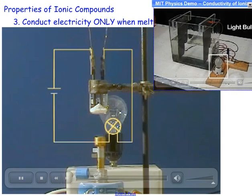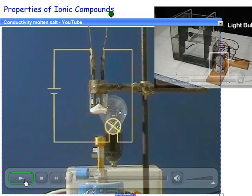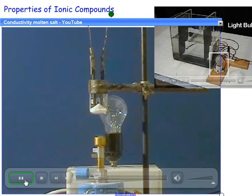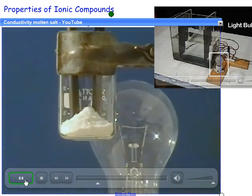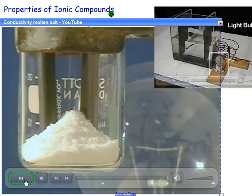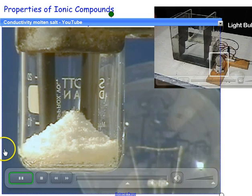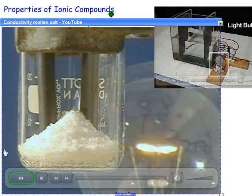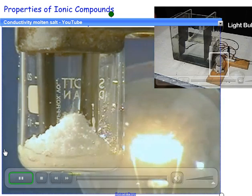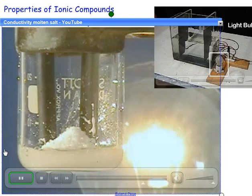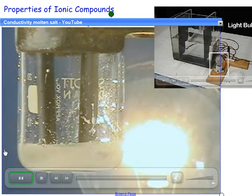So there's a flame being applied to the bottom of this beaker where there is sodium chloride. And if you look carefully down here, you can see signs of melting. These are the electrodes and as soon as these ions are free to move around, electricity can be conducted. And the result is that the light bulb will actually glow rather brightly when it gets into a good consistent liquid state.